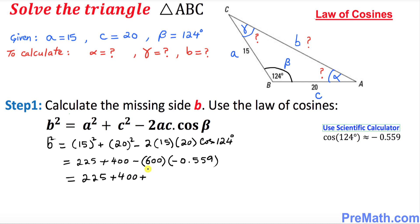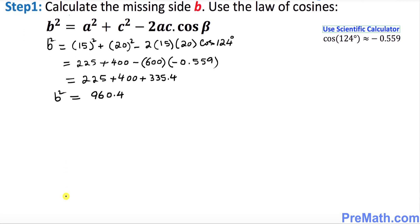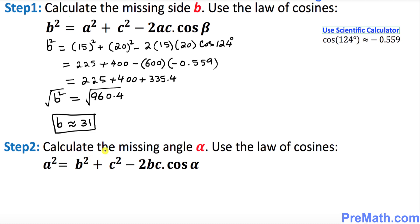Combining: 225 + 400 = 625, and when you multiply 600 by negative 0.559, the two negatives become positive, giving 335.4. Adding these together: 625 + 335.4 = 960.4, which equals b². Taking the square root of both sides, b is approximately equal to 31.